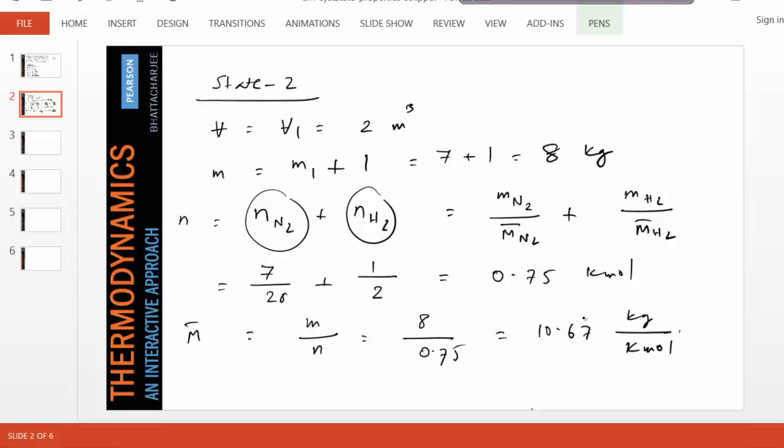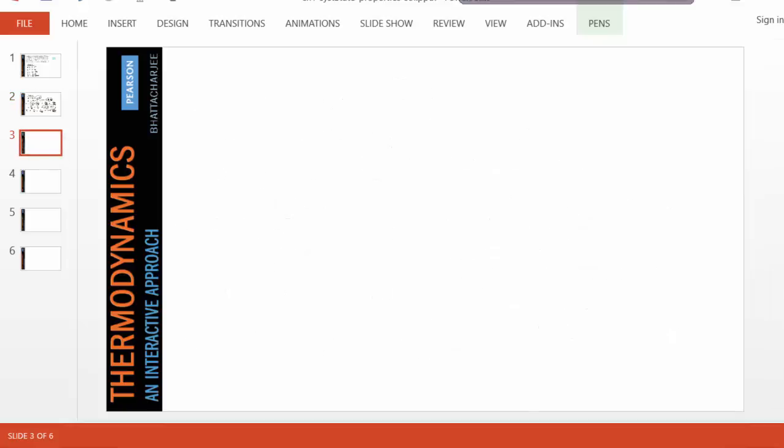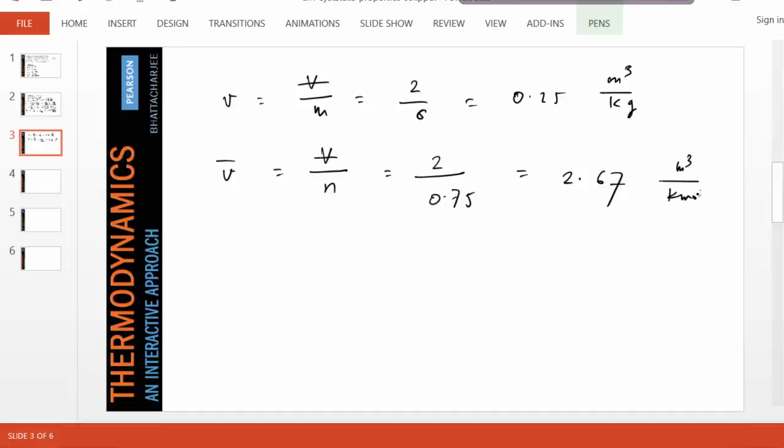To find the specific volume, now we know the volume and mass and mole, so therefore this is straightforward. What is specific volume? Volume per unit mass, which is 2 divided by 8, 0.25. And what is molar specific volume? It's volume per unit mole, which is 2 divided by 0.75, which is 2.67 meter cube per kilomole.